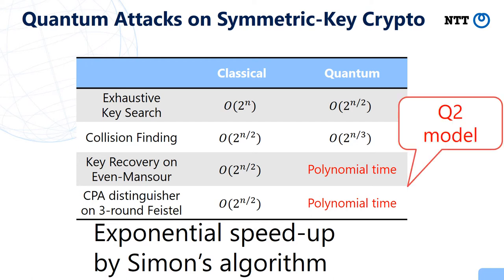So exponential speed-up is also possible for symmetric key cryptosystems, and this speed-up is obtained by using Simon's quantum algorithm. These polynomial time attacks are done in a specific quantum attack model called the Q2 model. Next, I will explain about quantum attack models.